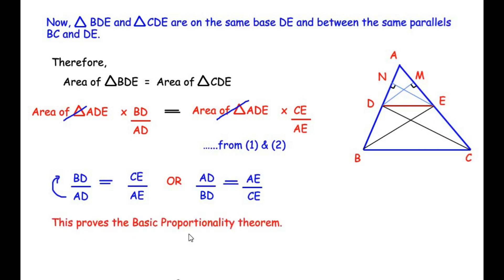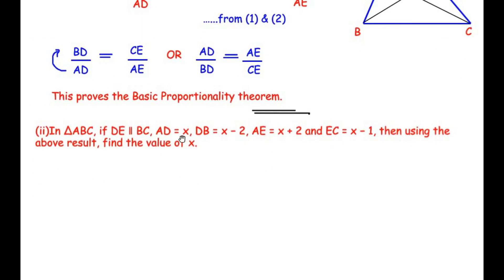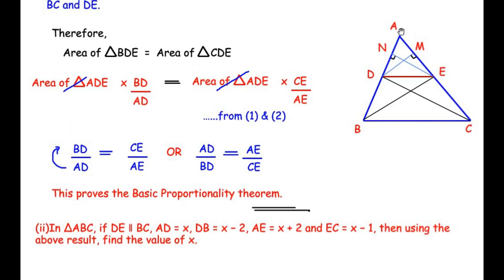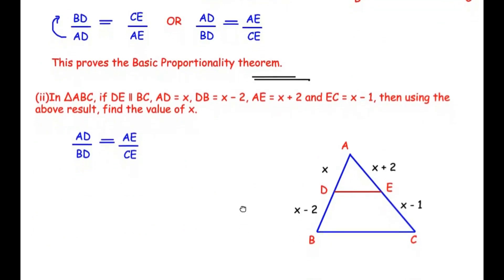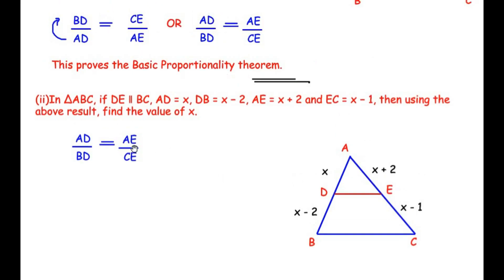This proves the basic proportionality theorem. Now moving to the second part of the question: in triangle ABC, if DE is parallel to BC, AD = x, DB = x − 2, AE = x + 2, and EC = x − 1, find the value of x using the above result. Using the same figure with triangle ABC and parallel line DE, the values are already marked on the diagram.